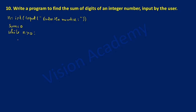Inside the loop I'm going to take a variable called rem (remainder) equal to n modulo 10. This gives me the remainder. Next, sum is equal to sum plus remainder. Then n is equal to n floor-divided by 10 — that is the double forward slash, which gives the quotient.